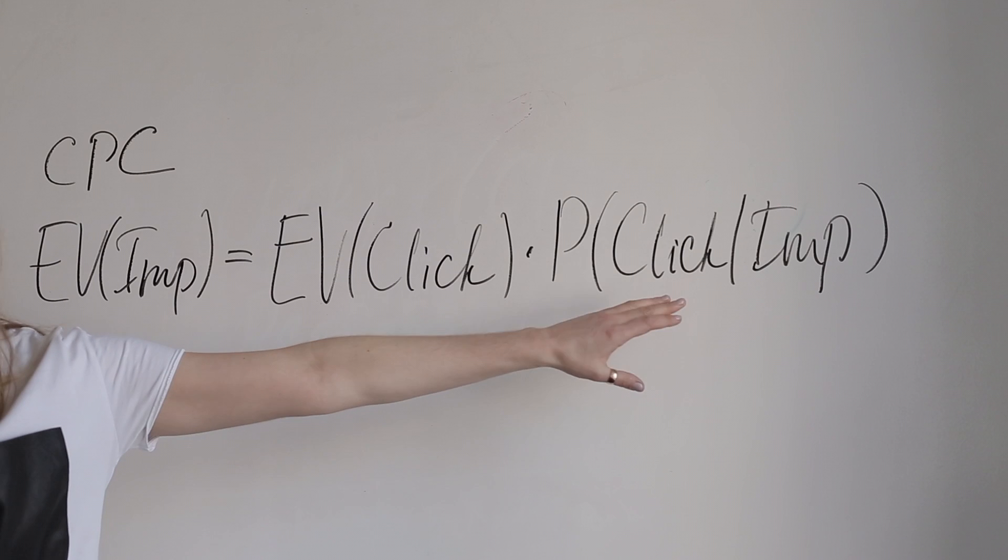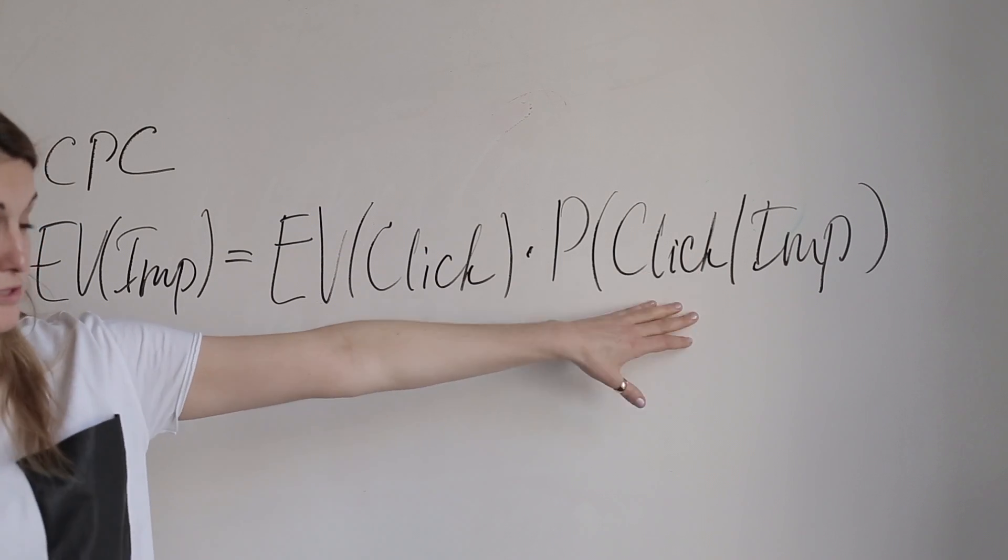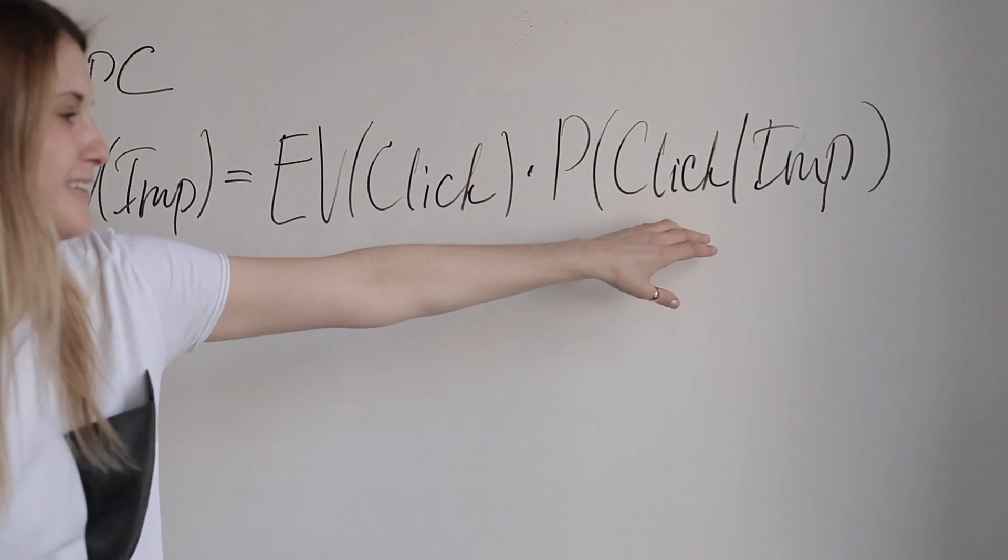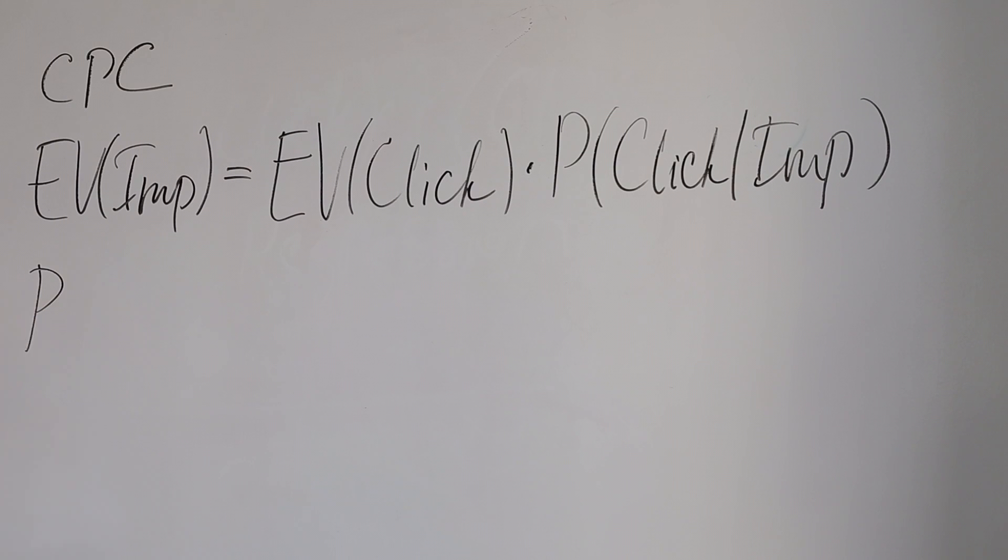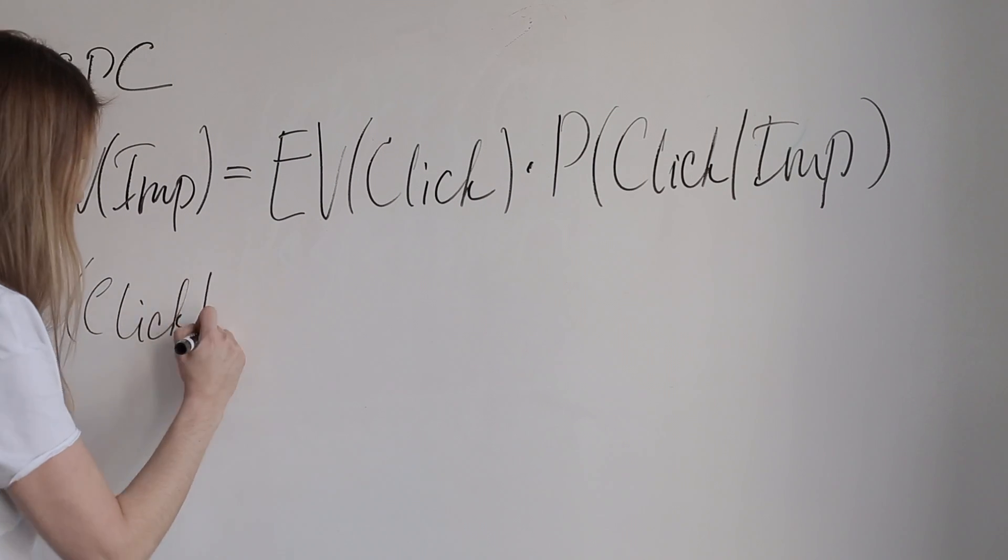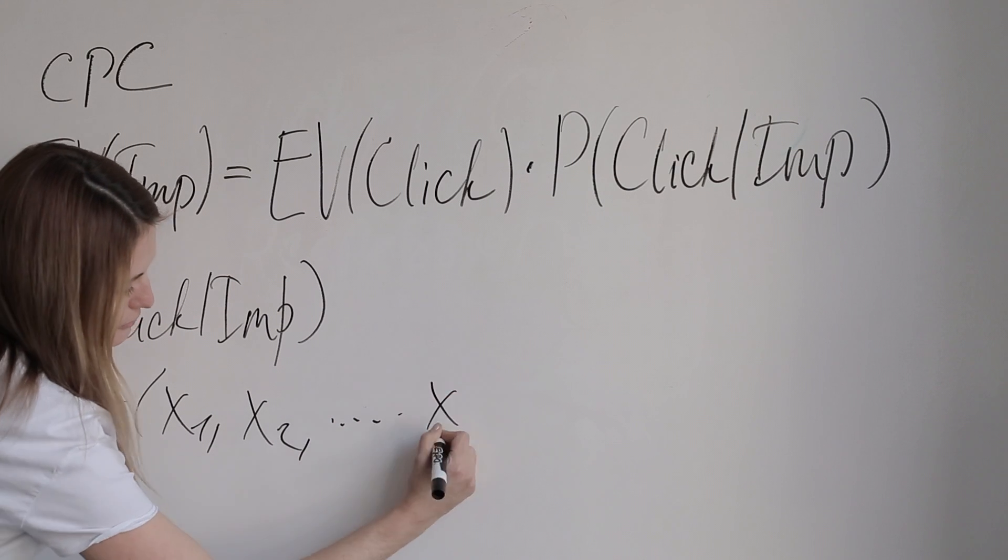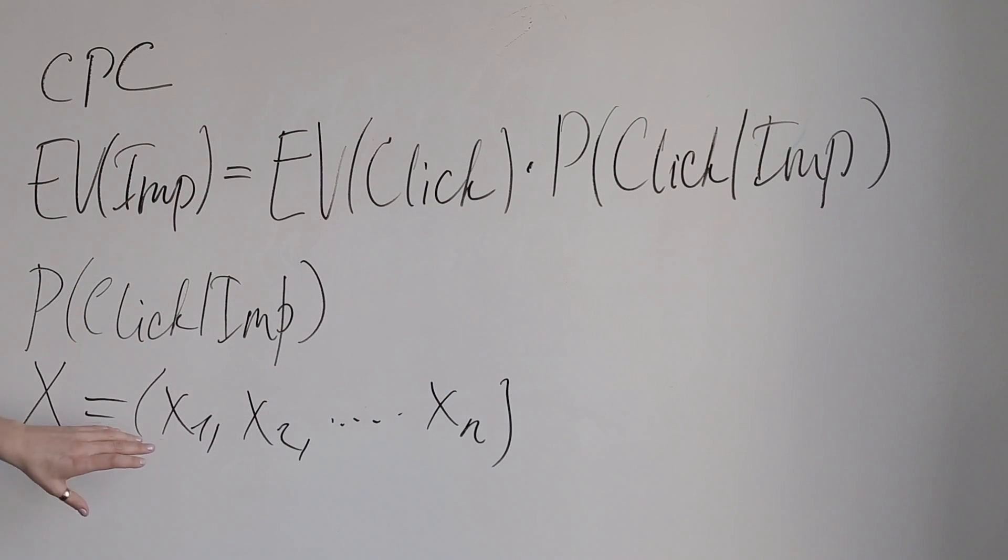This part is unknown. We're going to predict it using Genie AppNexus. To predict the probability of a click given an impression, we use logistic regression. Logistic regression uses a feature vector X with many features. Each X could be 0, 1, or some historical CTR, or some other transformation, a transformed feature.